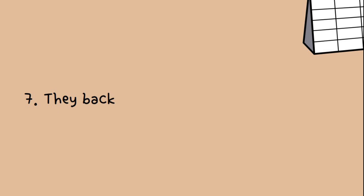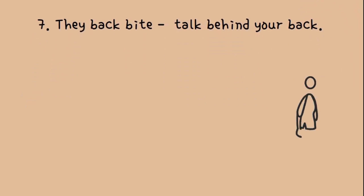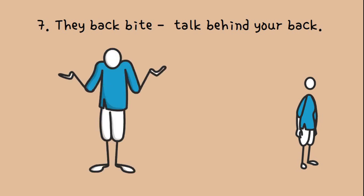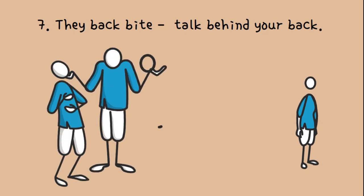Seven: They backbite, talk behind your back. Generally talk trash about you. They don't have anything good to say about you. They will even sabotage you or deter something from you.